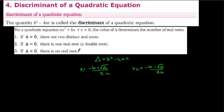If delta is greater than zero, the square root is different from zero. When you add that value to minus b, and when you subtract from minus b, you get different results — that is why there are going to be two different roots. But when delta is equal to zero, there is going to be only one root, because minus b plus zero and minus b minus zero make no difference. The result is x1 = x2 = minus b over 2a, and this is called the double root case.